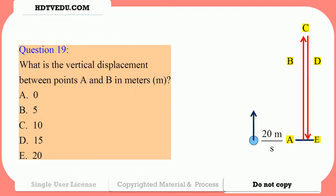Question number 19: What is the vertical displacement between points A and B in meters? 0, 5, 10, 15, or 20? Question number 20: What is the vertical displacement between points B and C in meters? 0, 5, 10, 15, or 20? Question 21: What is the vertical displacement between points A and C in meters? 0, 5, 10, 15, or 20?